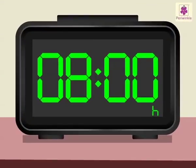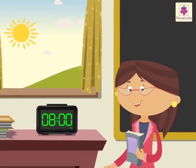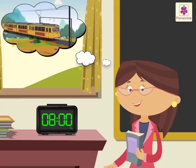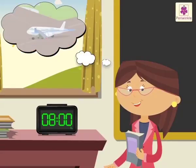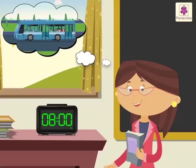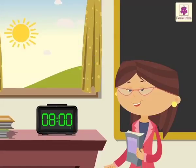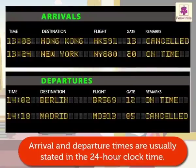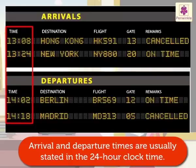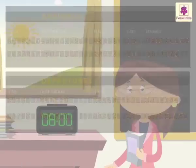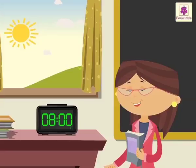Look at the 24-Hour Clock. It helps us to know the correct time of the arrival and departure of trains, planes, and long-route buses without confusion of AM or PM. Arrival and departure times are usually stated in the 24-Hour Clock time. Let's understand it in a better way with an example.